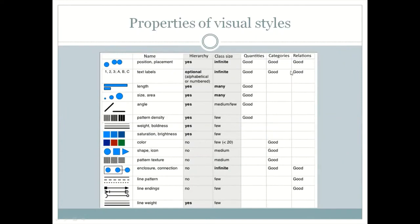If you look at which thing works best for what — quantities, categories, and relations — these are the three dimensions, along with class size, meaning how many data points can be used. If you have a lot of data points you'd definitely avoid line patterns since you can't have too many. Similarly, pattern density wouldn't work with a lot of different kinds of information. For quantities, angles work fine and size works fine — this is basically what we use in maps to show which area is doing well.